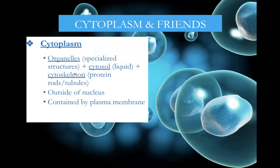Now we'll talk about the cytoplasm. Cytoplasm is made up of cytosol, which is the liquid part — mostly water with dissolved nutrients. There are also lots of organelles, which are specialized structures, as well as the cytoskeleton, which provides structure for the cell. The cytoplasm is everything inside the plasma membrane except for the nucleus.